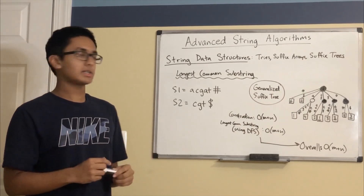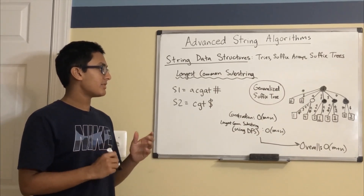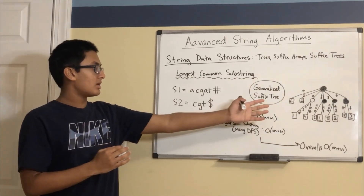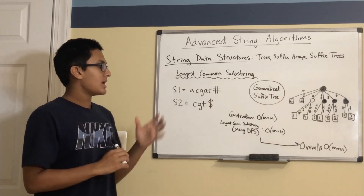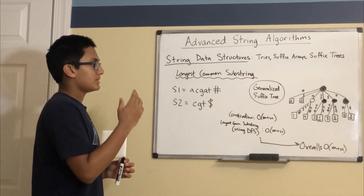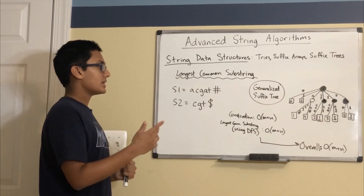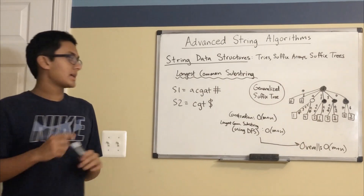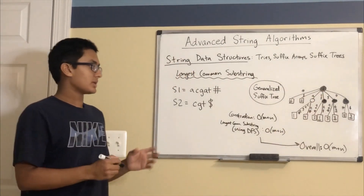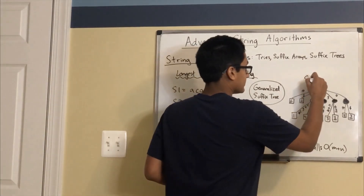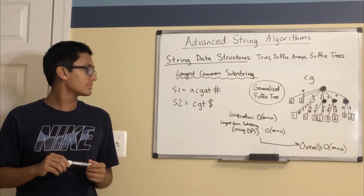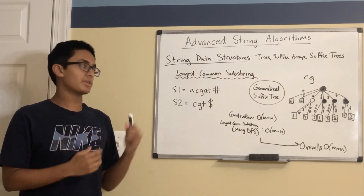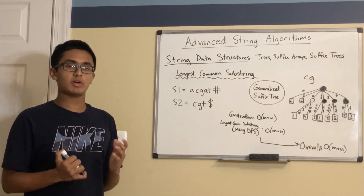After completing this construction in O(m + n), we use a DFS to identify which nodes contain suffixes for both string 1 and string 2. All nodes satisfying this property are marked in black. After identifying which nodes contain suffixes for both strings, all we have to do is identify the deepest such node — in this case, that's the node with two characters on its edge. Therefore, the longest common substring between these two strings is CG. Our overall time complexity is also O(m + n), since both the construction and the DFS have time complexity O(m + n).